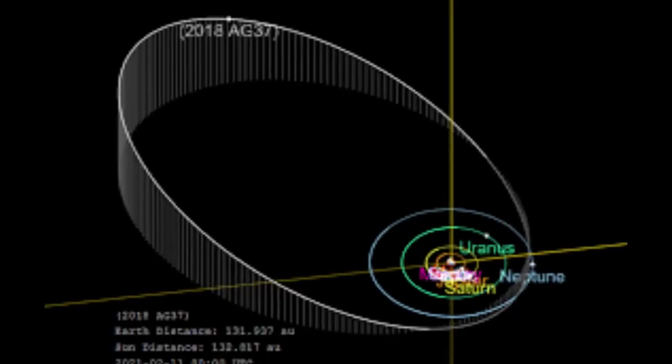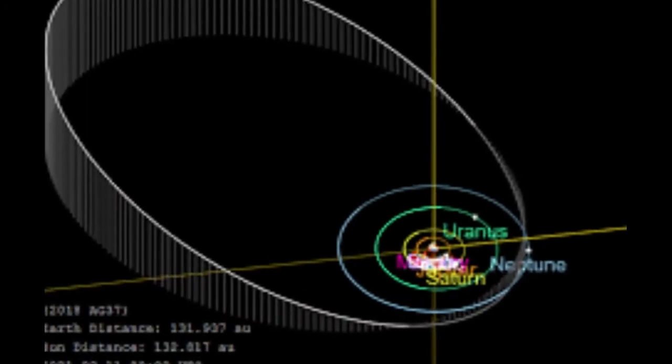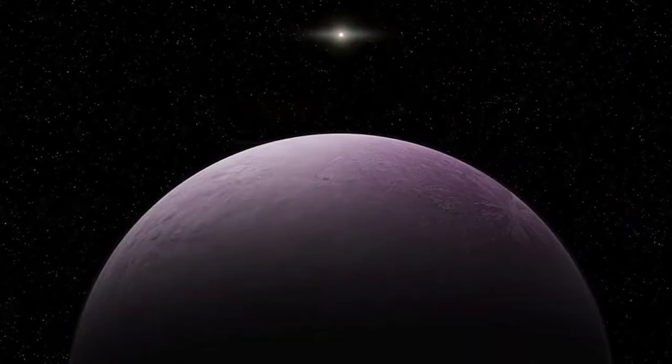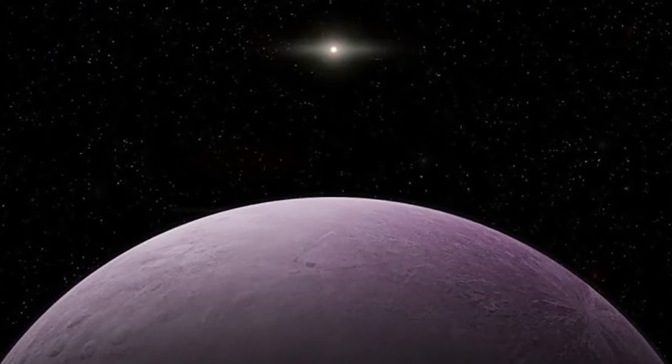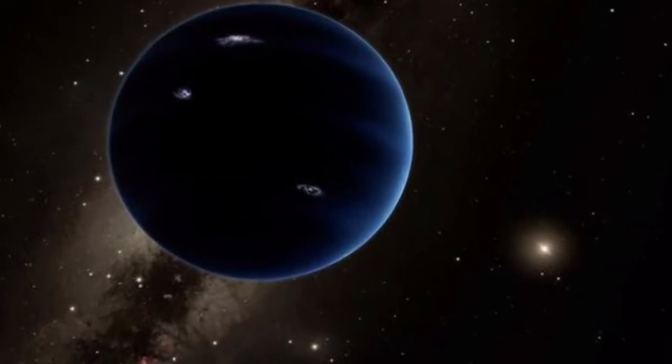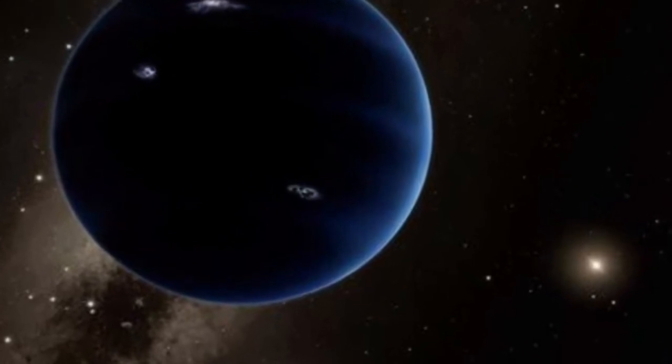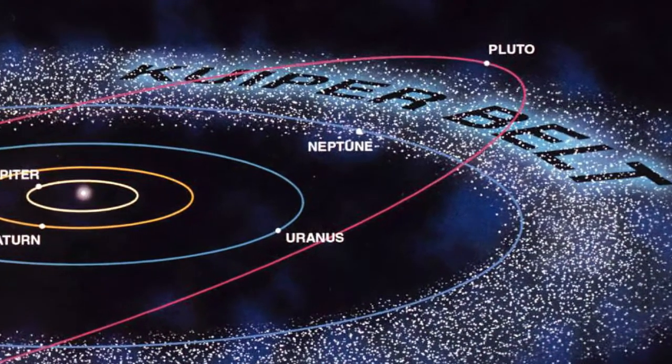It has been given the provisional designation 2018 AG37. After careful observation, scientists have calculated its orbit. Far Far Out swings out as far as 175 astronomical units and comes in as close as 27 astronomical units, inside the orbit of Neptune.